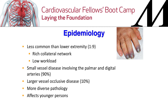Upper extremity ischemia is less common than lower extremity. You see a cold leg more than a cold hand on the OR board, because there is a rich collateral network around the scapula that provides blood flow to the arm once the inflow vessel is diseased. There is usually small vessel disease involving palmar and digital arteries — people come with gangrenous fingers despite signals in the radial, ulnar, and palmar arch. Larger vessel occlusive disease is rare, but we do see a fair share.